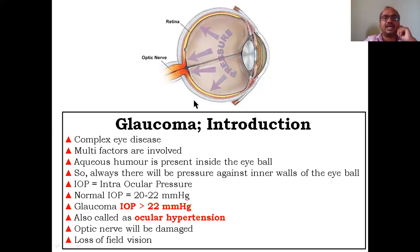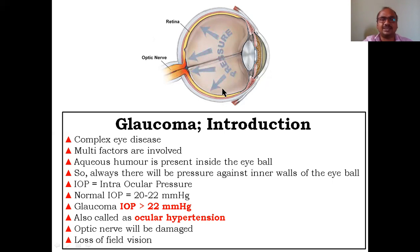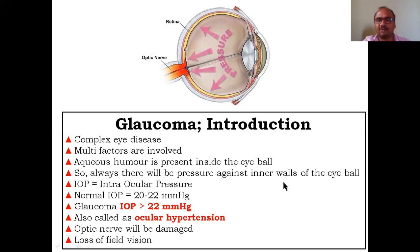If you see the structure of the eye, it has a round shape. Inside there is aqueous humor — see the pointer here where I'm showing. Aqueous humor is present inside the eyeball; this area consists of a liquid called aqueous humor. There is always pressure on the inner walls of the eye, exerted by the aqueous humor. This is called IOP — intraocular pressure. Intra means inside.